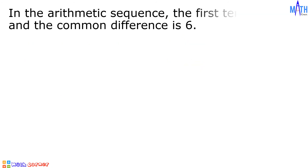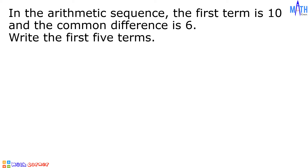Next example: in the arithmetic sequence, the first term is 10 and the common difference is 6. Let us write the first 5 terms of this arithmetic sequence. The first term, denoted by a sub 1, is equal to 10. To determine the second term, we will add the first term and the common difference. We have 10 plus 6 is equal to 16.